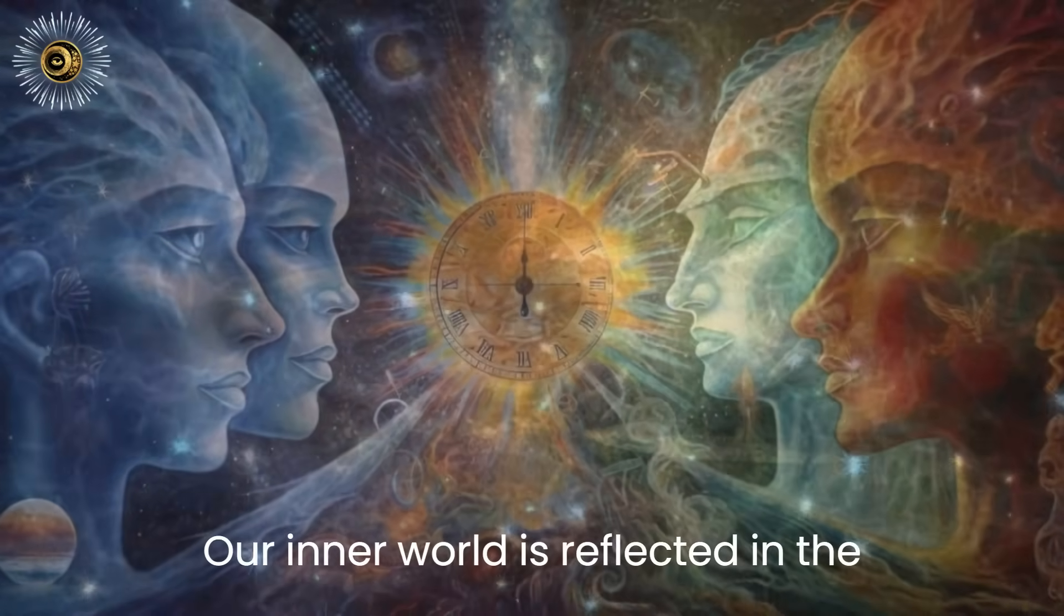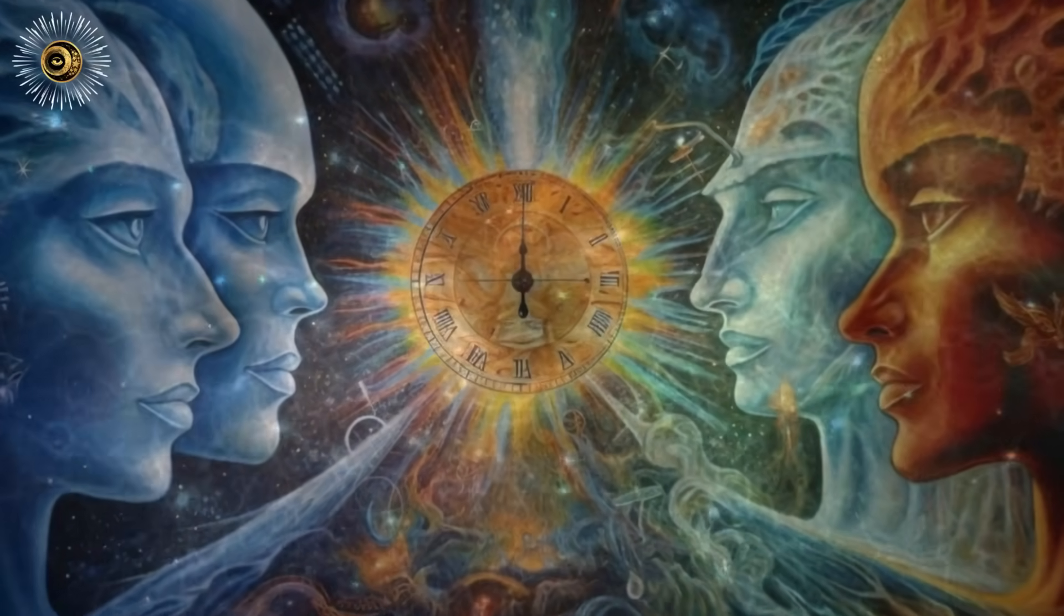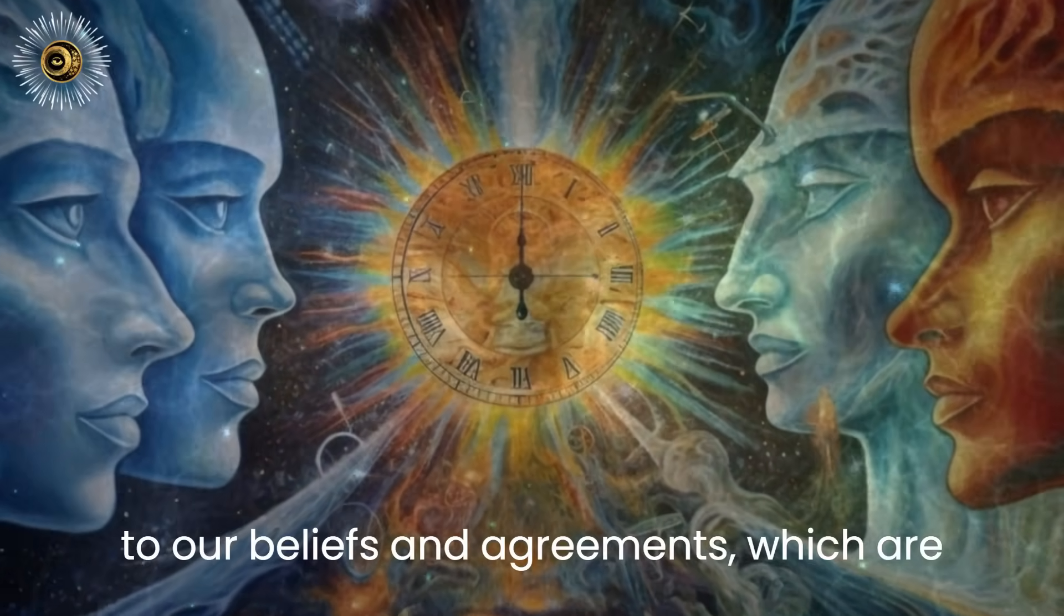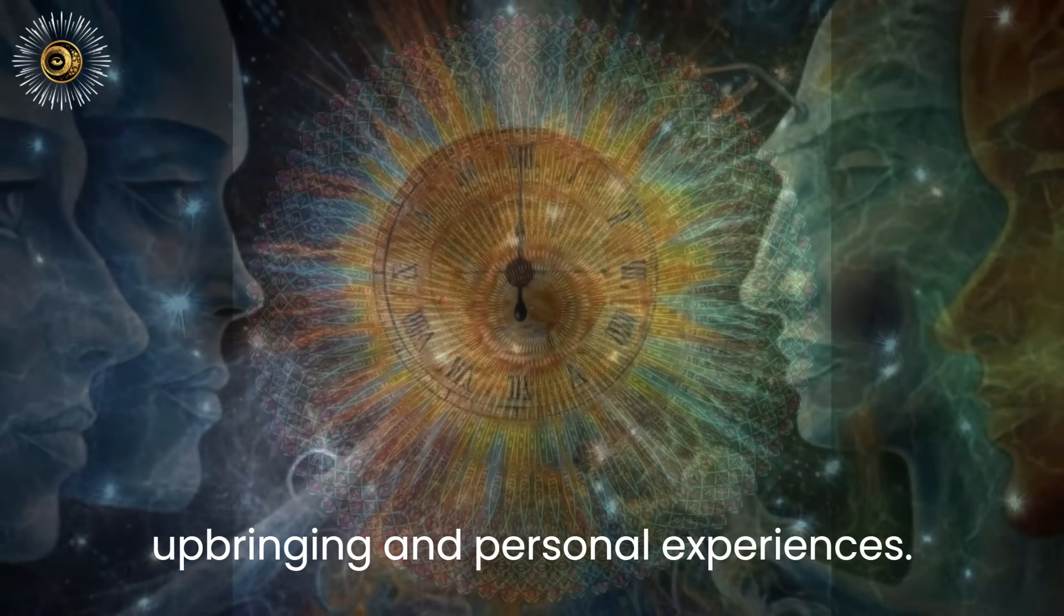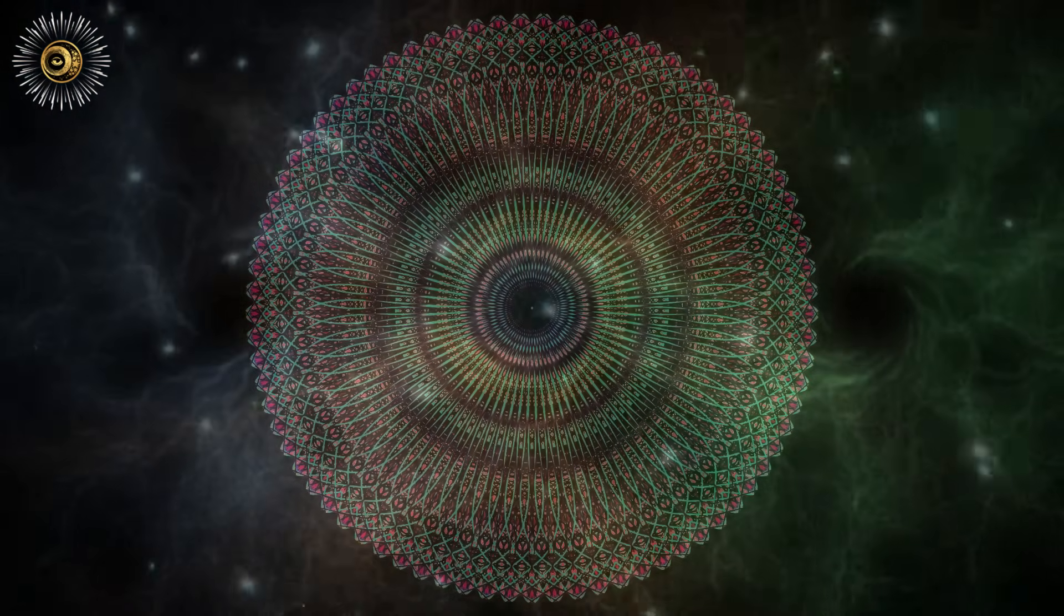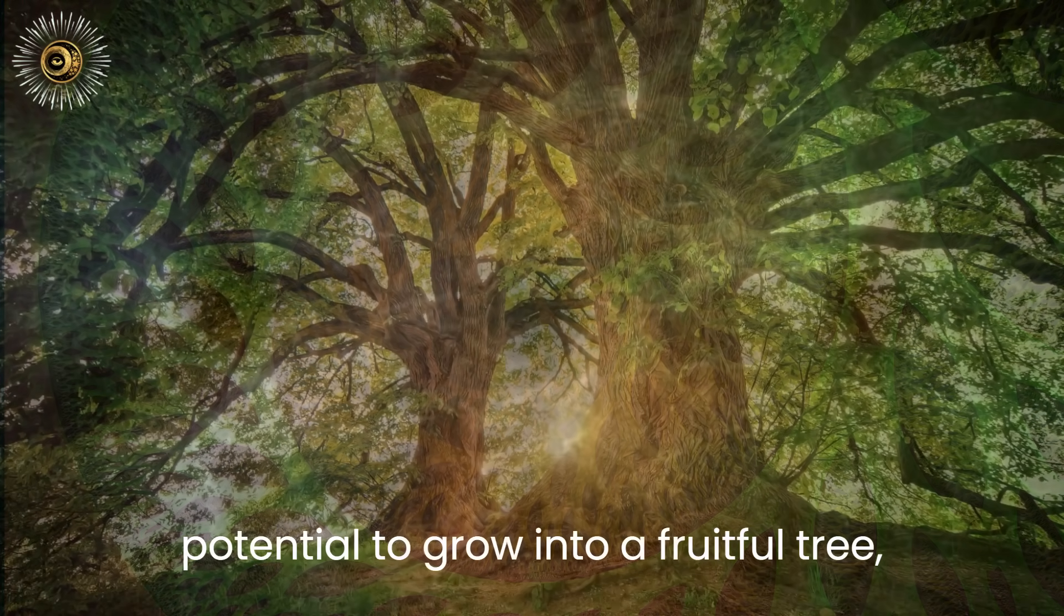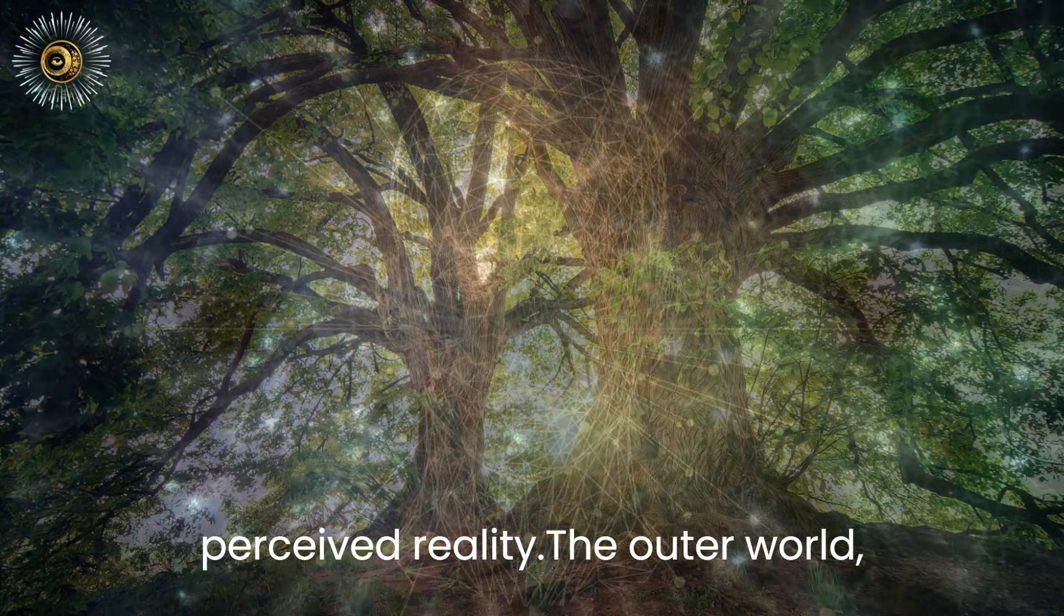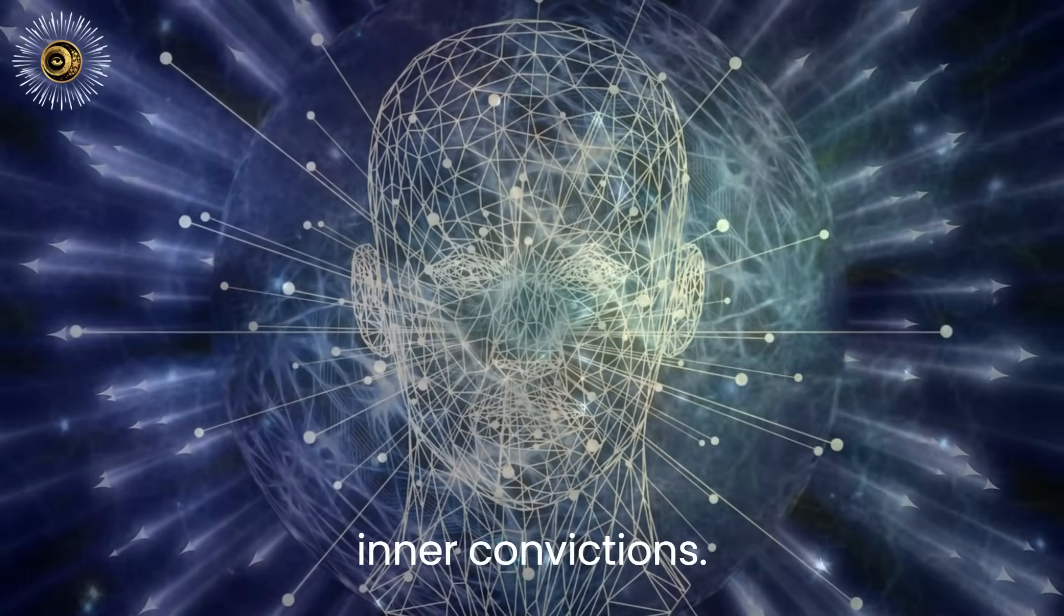Our inner world is reflected in the outer world, and vice versa. What we perceive as reality corresponds to our beliefs and agreements, which are often shaped by societal conditioning, upbringing, and personal experiences. Just as a seed holds within it the potential to grow into a fruitful tree, our beliefs and agreements shape our perceived reality. The outer world we perceive is intricately tied to our inner convictions.